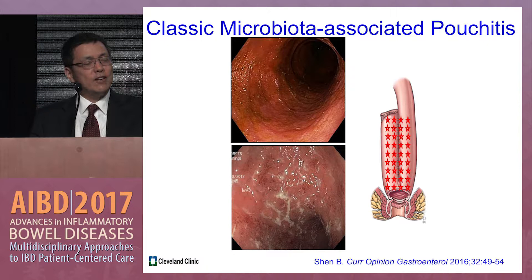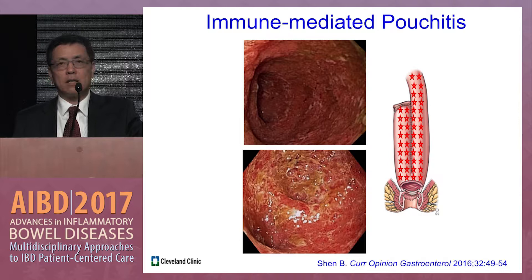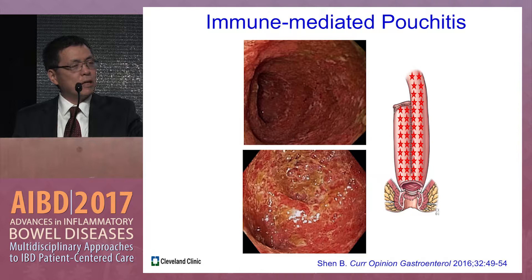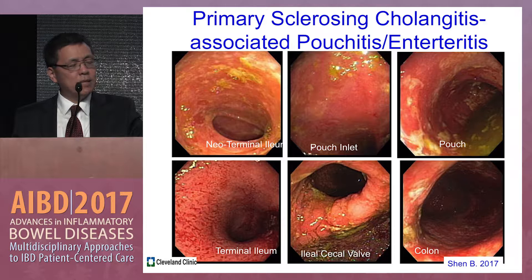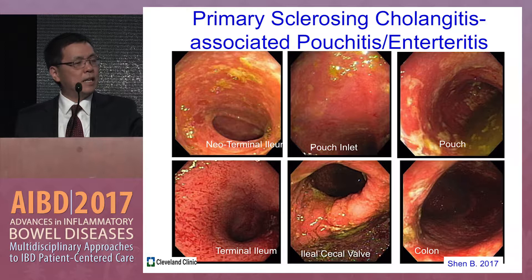In autoimmune or immune-mediated pouchitis, because it involves a systemic factor, pouch inflammation can extend into the small bowel or even the afferent limb. Diffuse inflammation in the small bowel and pouch body with a wide-open pouch inlet is characteristic. A classic example is PSC-associated enteritis and pouchitis — you can see diffuse inflammation of the afferent limb on the left and diffuse inflammation of the pouch on the right.